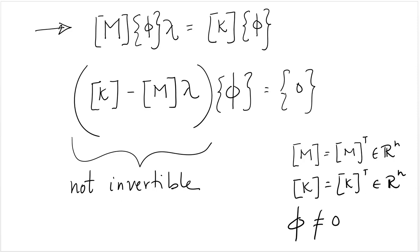lambdas are such that they make K minus M times lambda not invertible, which in linear algebra terminology, it's called singular. That matrix is singular, which basically means that its determinant is equal to zero. So the determinant of a matrix that is not invertible is equal to zero.